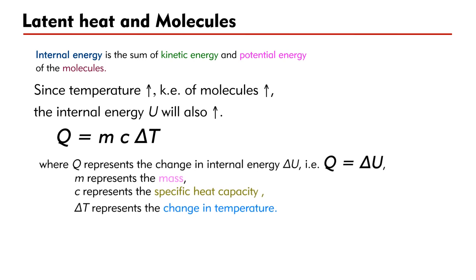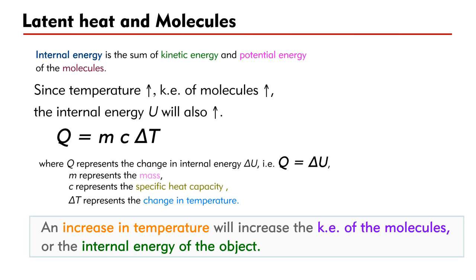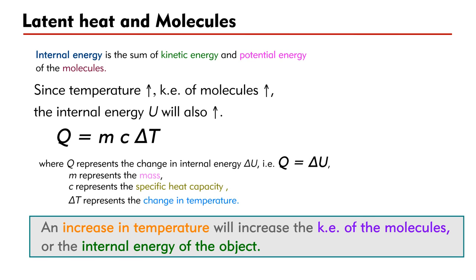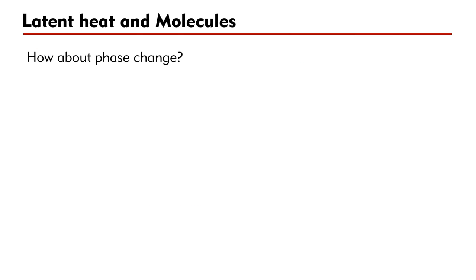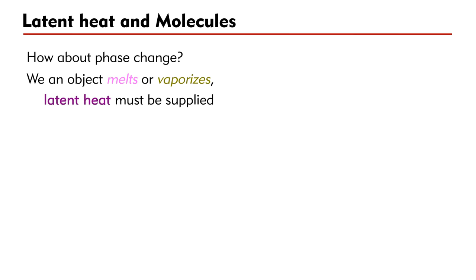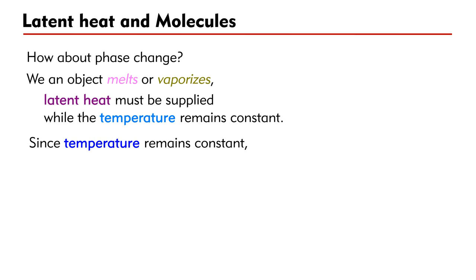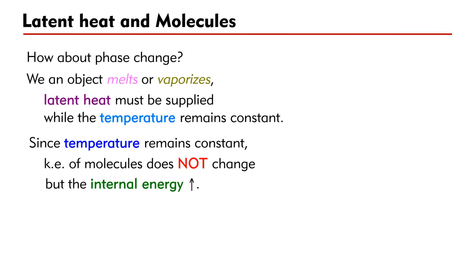Let's link up all the things together. An increase in temperature will increase the kinetic energy of the molecules, or the internal energy of the object. How about phase change? When an object melts or vaporizes, latent heat must be supplied while the temperature remains constant at the melting point or boiling point. Since temperature remains constant, the kinetic energy of the molecules does not change, but the internal energy is increasing.